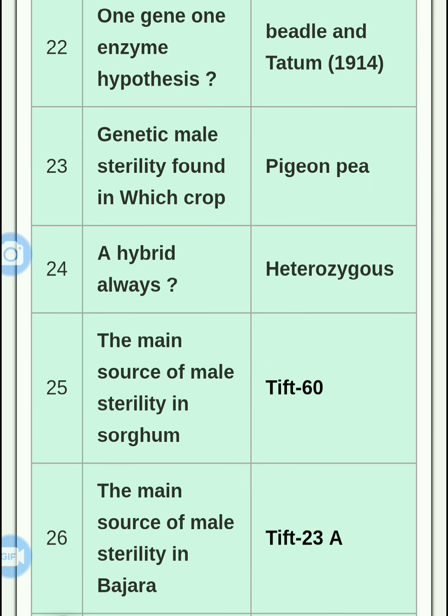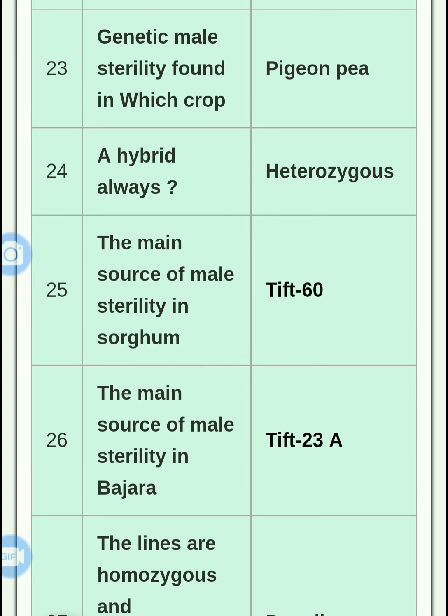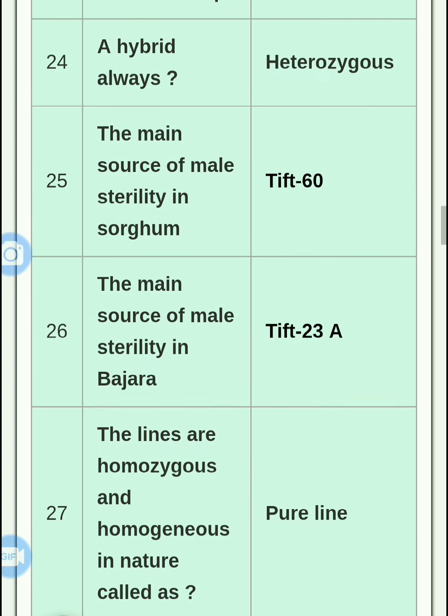Genetic male sterility, i.e. GMS, is found in which crop? It is found in Pigeon Pea — remember that. Also remember: a hybrid is always heterozygous, not homozygous.